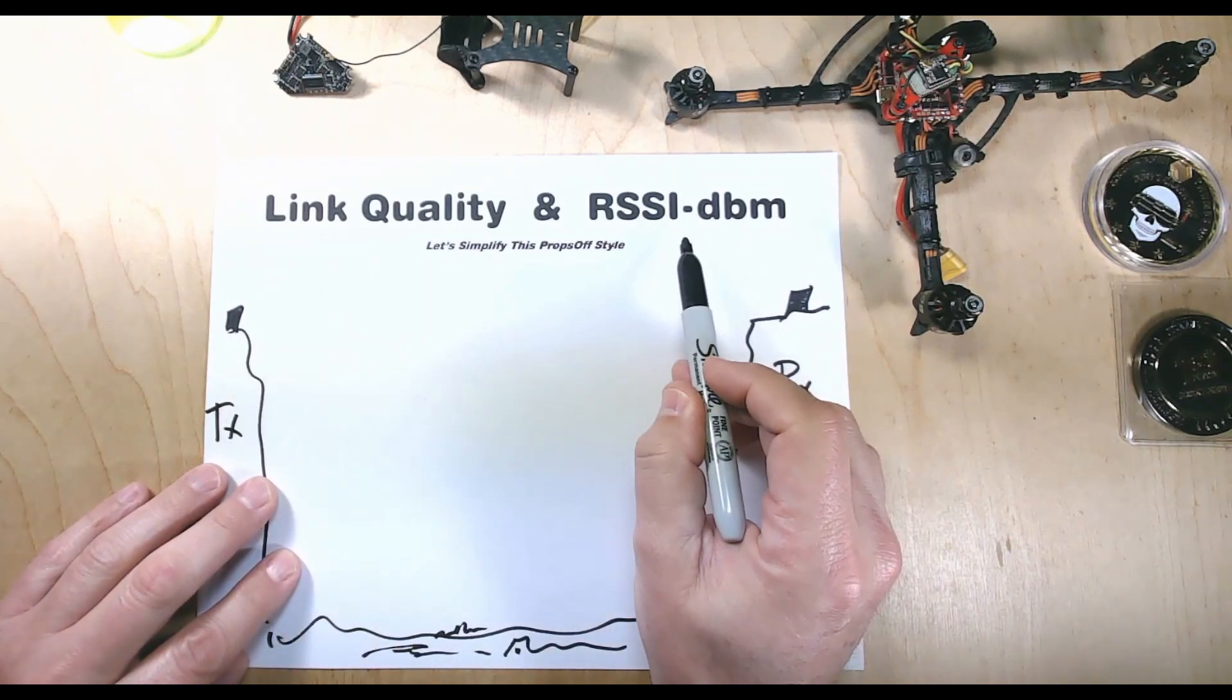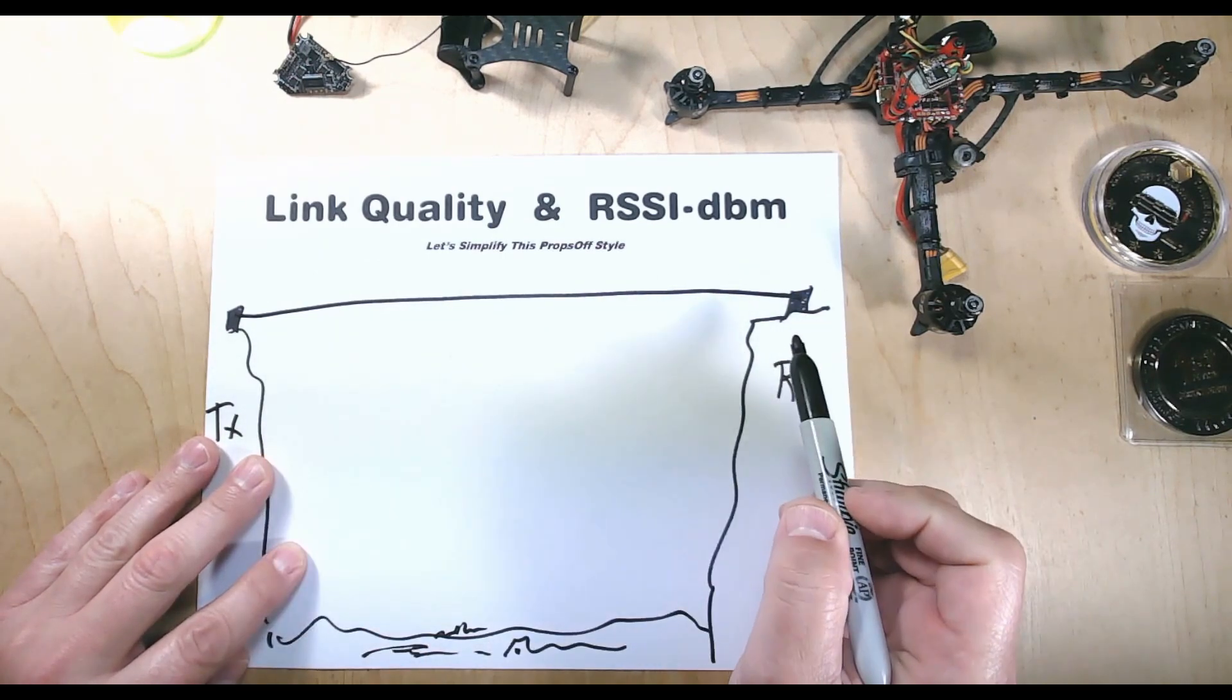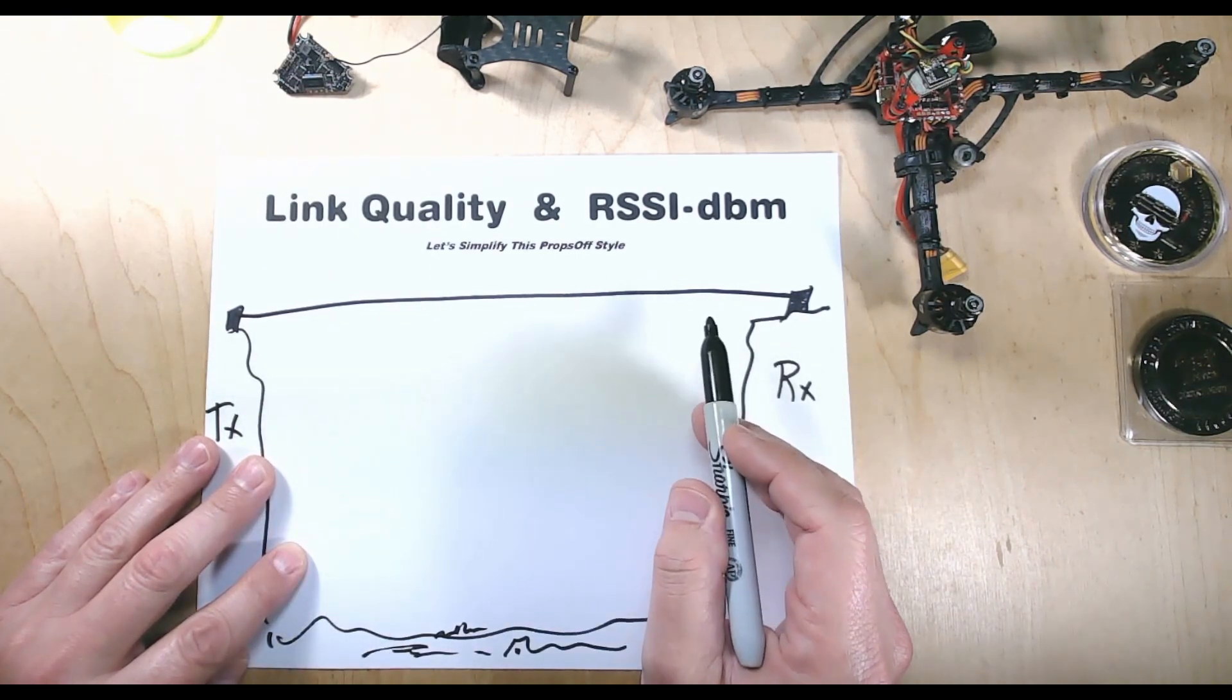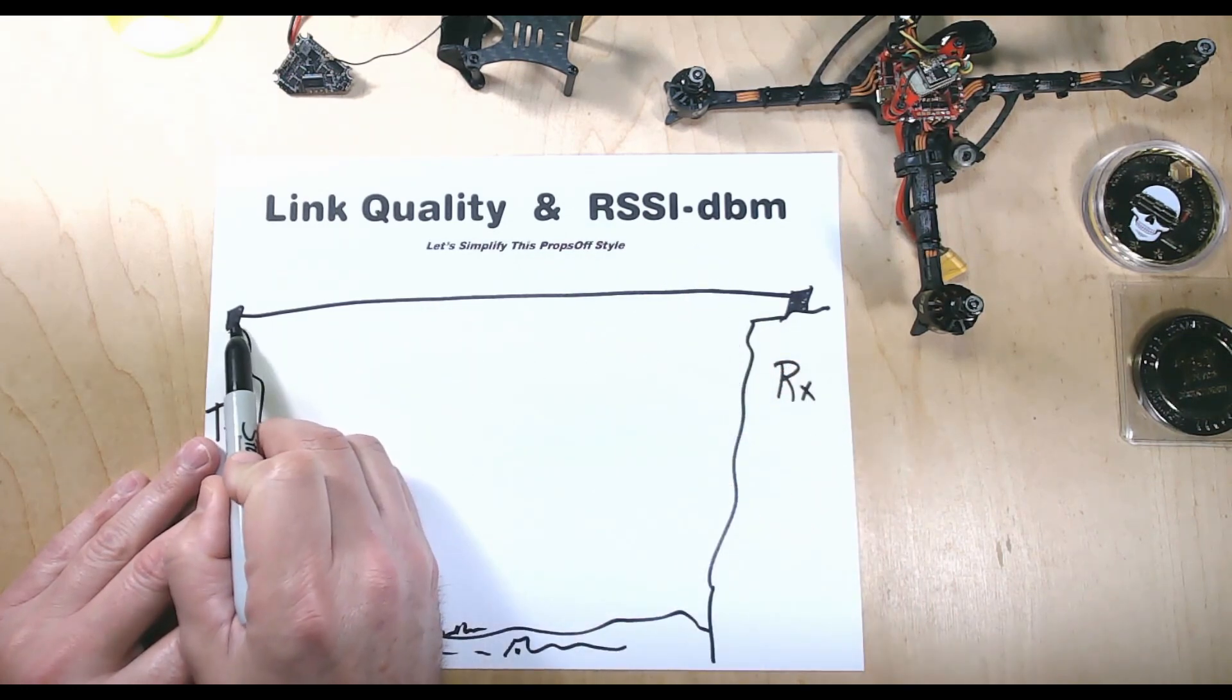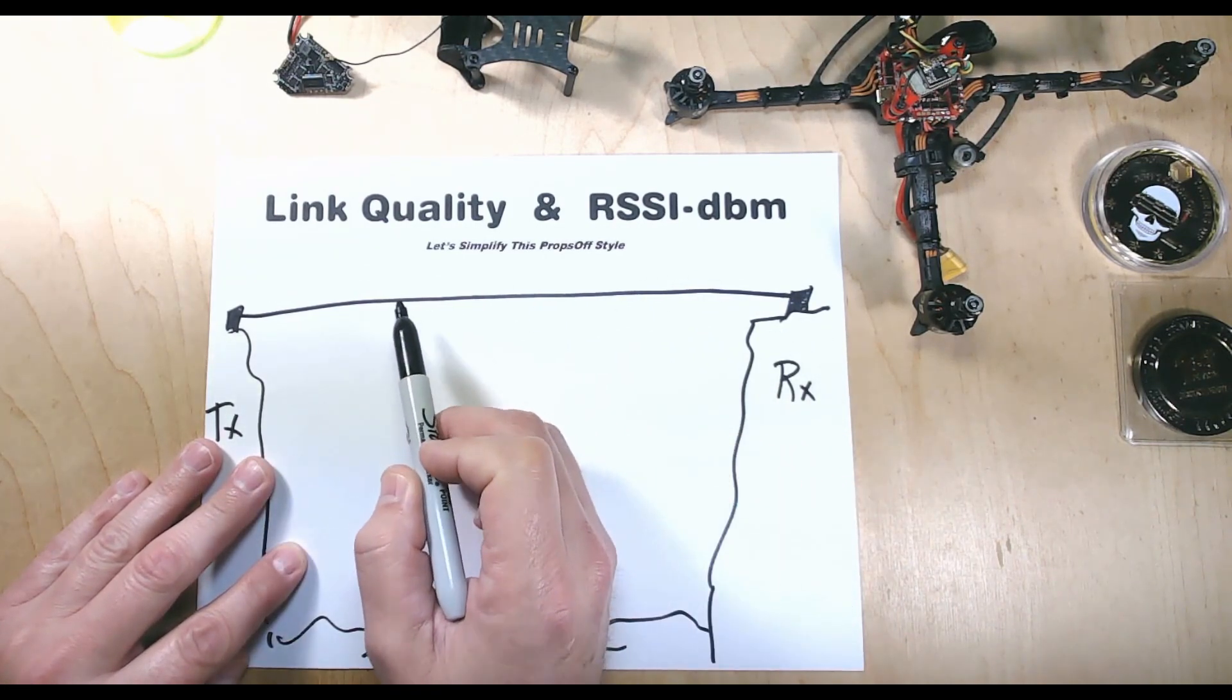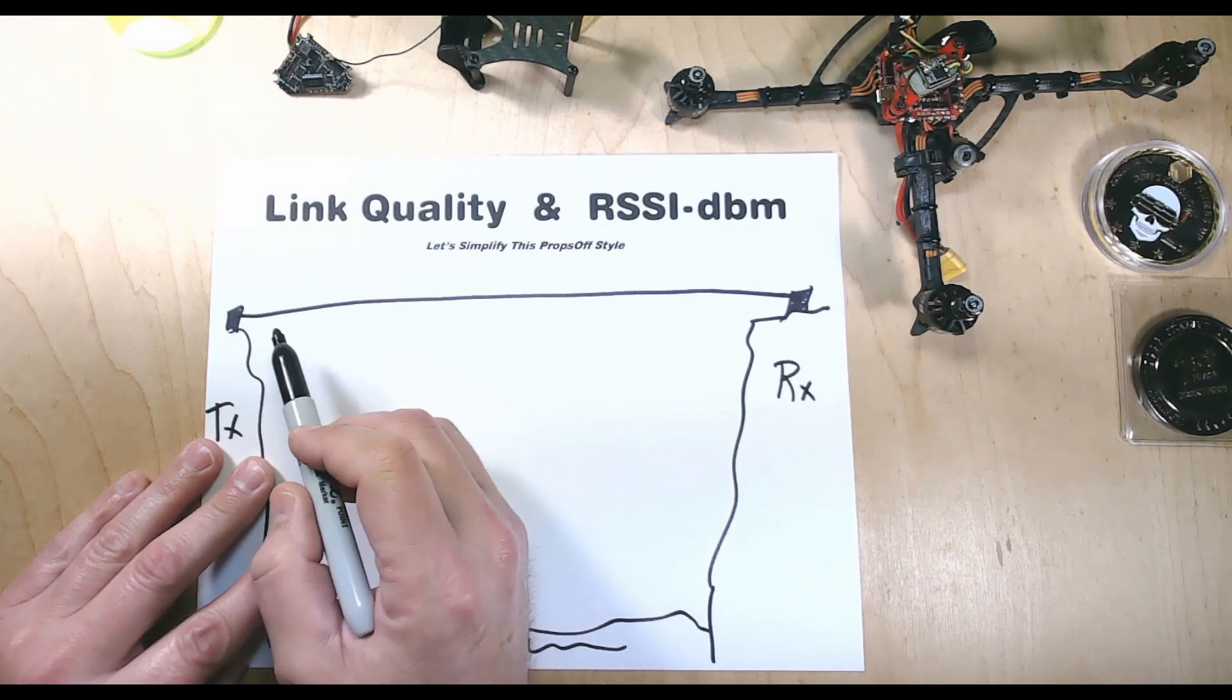I'm going to start with RSSI-dbm. RSSI-dbm is our connection between the two. Imagine a rope, or better yet, a cable going between these two points. RSSI is the strength of the bond that we have between these two points. We need to make sure that our cable is strong enough to handle the packets that we're going to put through—the packet rates of 500 Hertz or 250 Hertz.